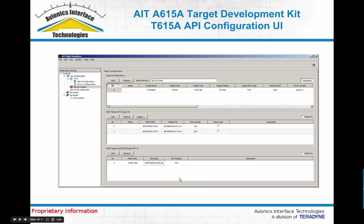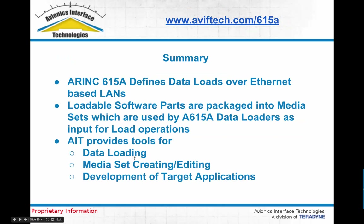Optionally, you can define all of the LSPs and, for each LSP, all of the load files that the associated target is pre-programmed to accept. If an incoming request comes in for a load file that's not in this configured list, the target API will provide an event notification to the user application indicating that a request was received for an LSP not in the configuration, and then provide the application the opportunity to accept or deny that request. That concludes our overview and discussion of 615A loadable targets and the target SDK that we provide at AIT.